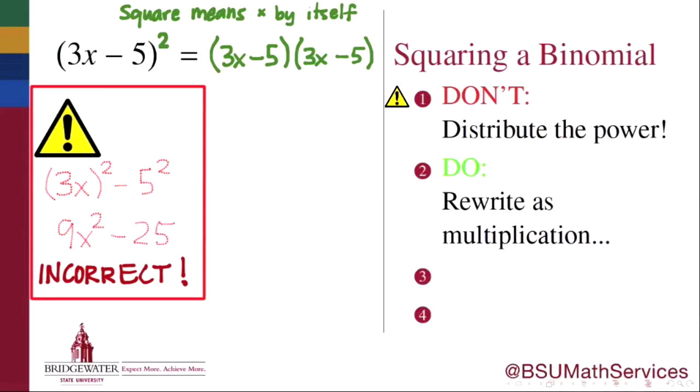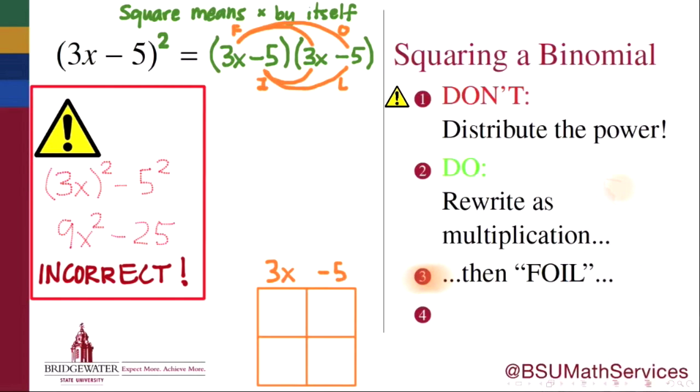After rewriting this expression using multiplication instead of a power, now we can distribute that multiplication across the subtraction that's happening now in both of the factors, 3x minus 5. What that looks like is the process which many algebra students know as FOIL. Multiply the first pair of terms, the outer pair of terms, the inner pair of terms, and the last pair of terms, and add all of those terms together.